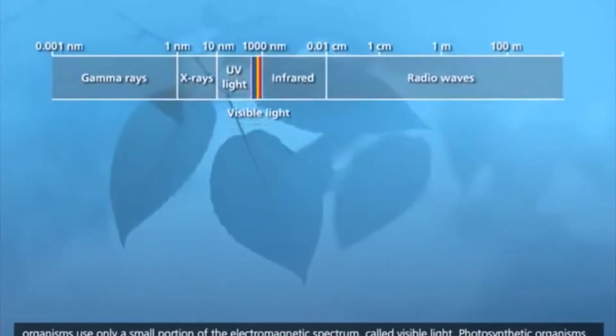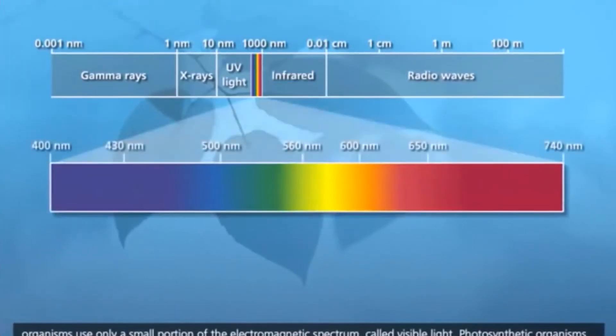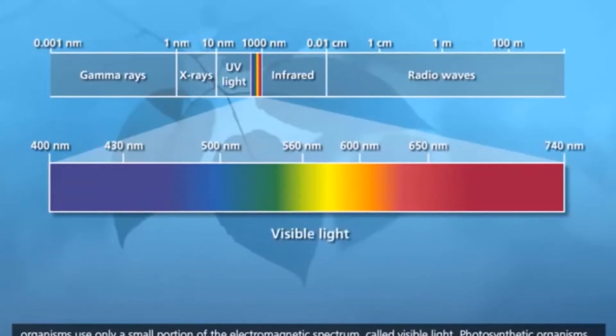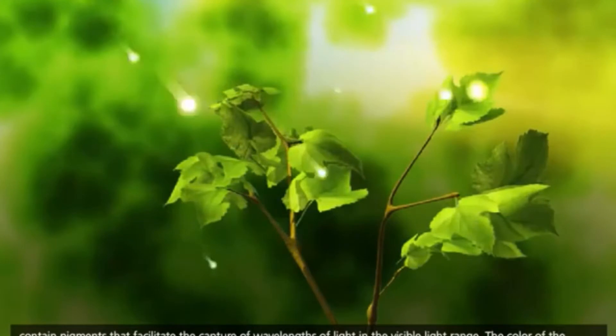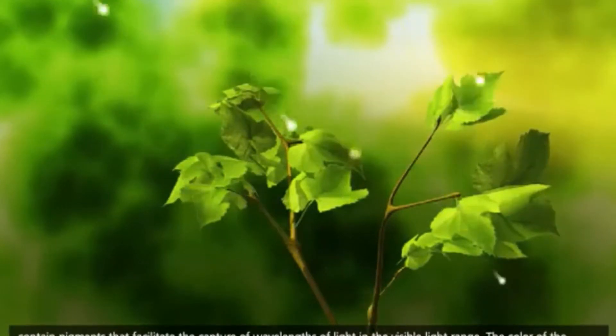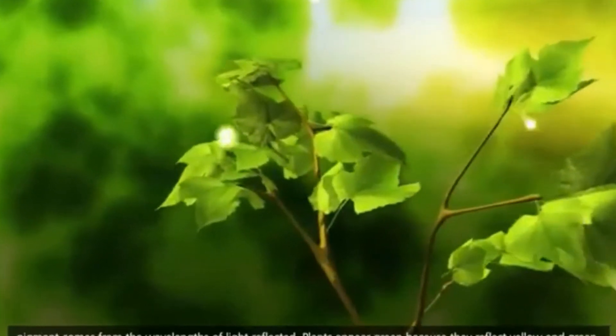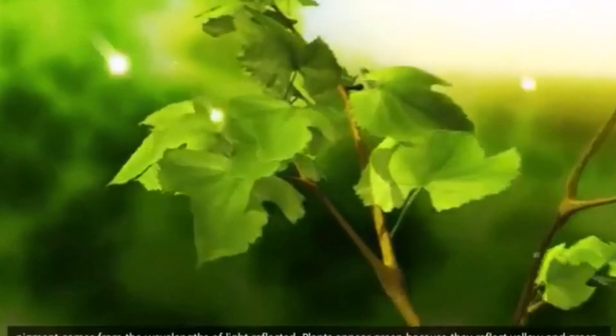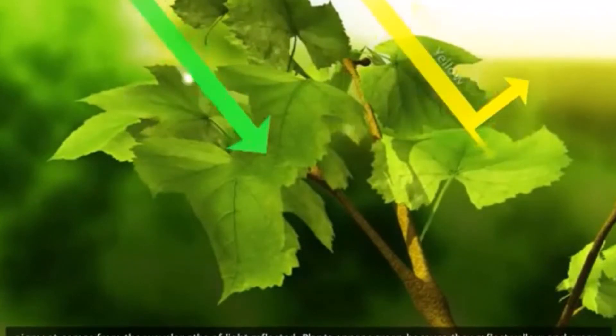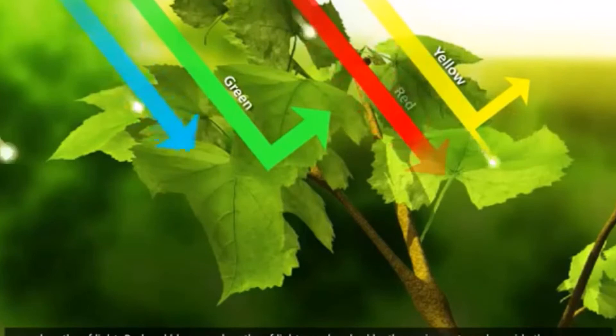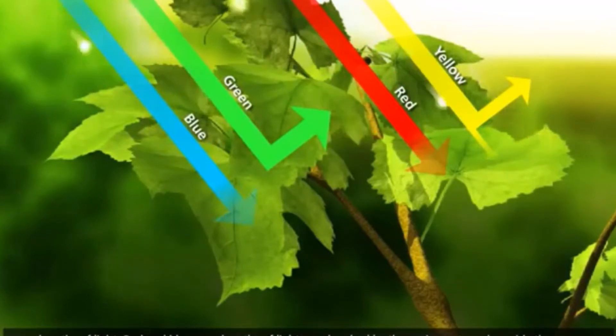Photosynthetic organisms use only a small portion of the electromagnetic spectrum, called visible light. Photosynthetic organisms contain pigments that facilitate the capture of wavelengths of light in the visible light range. The color of the pigment comes from the wavelengths of light reflected. Plants appear green because they reflect yellow and green wavelengths of light. Red and blue wavelengths of light are absorbed by these pigments and provide the energy that is used for photosynthesis.